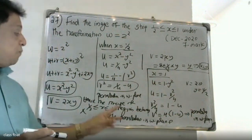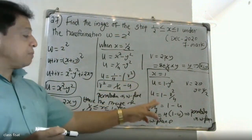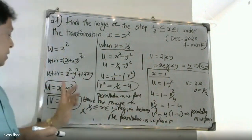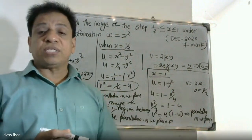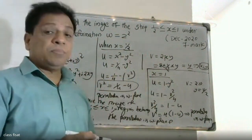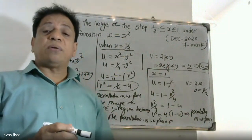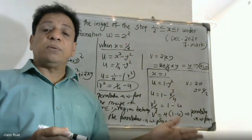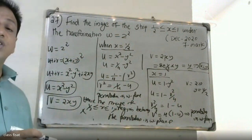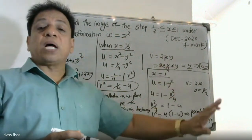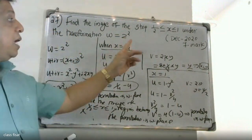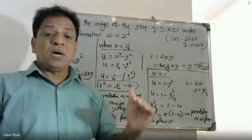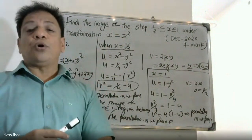The parabola v² = 1/4 - u corresponds to x = 1/2, and the parabola v² = 4(1 - u) corresponds to x = 1. The answer is the region between these two parabolas in the w-plane.